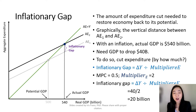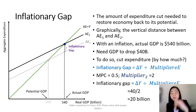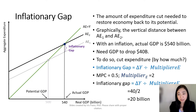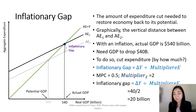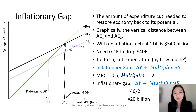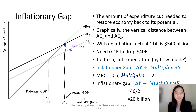You can see that our aggregate expenditure, AE, is going to move up from AE1 to AE2. And as a result, our actual GDP is going to be higher than our potential GDP, and we have an inflation. In our example, our actual GDP is $540 billion, and our potential GDP is $500 billion. So we want our GDP to go down by $40 billion.